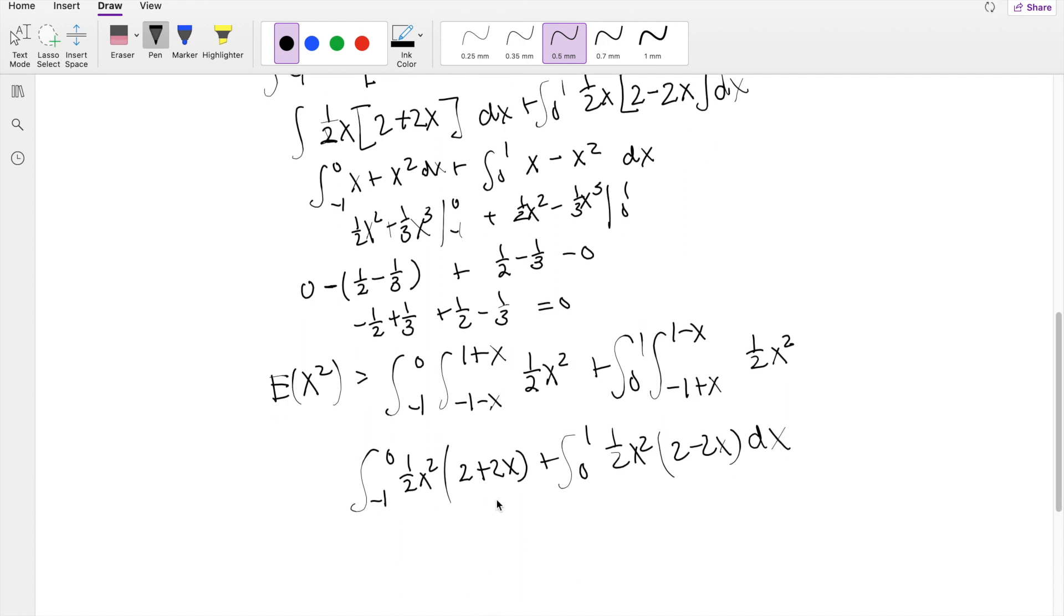Multiplying the 1 half to x squared in, you get negative 1, 0, x cubed plus x squared, plus x cubed, plus going from 0 to 1, you get x squared minus x cubed, dx.